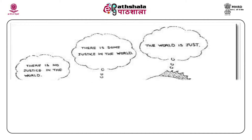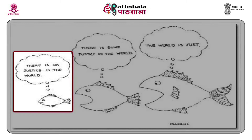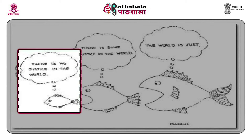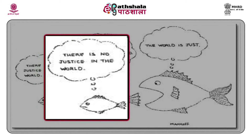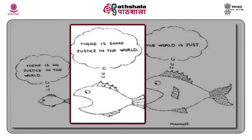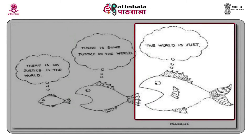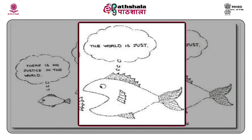A picture illustrates this concept with three fishes. The smallest fish, which will be eaten by others, thinks there is no justice in the world. The fish next to it, which will eat the smaller fish, thinks there is some justice in the world. The biggest fish, which can eat any other fish yet would not be eaten by anyone, thinks the world is just.